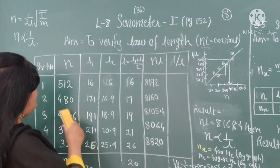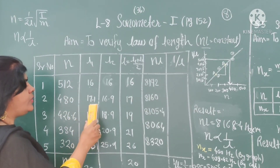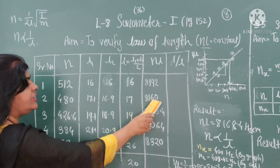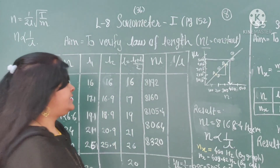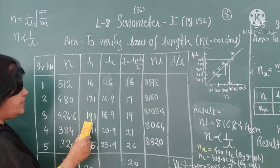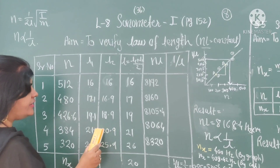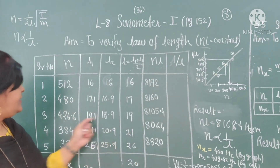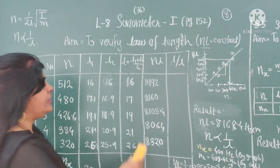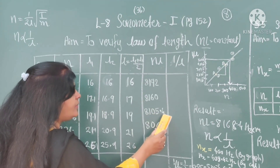Next, the second reading: frequency 480, observation is 17.1 and 16.9, mean is 17. After the log calculation, NL will be 8160. For the third reading: frequency 426.6, readings are 19.2 and 18.9, mean is 19. The mean 19 multiplied by 426.6 — after log calculation — gives 8105.4.